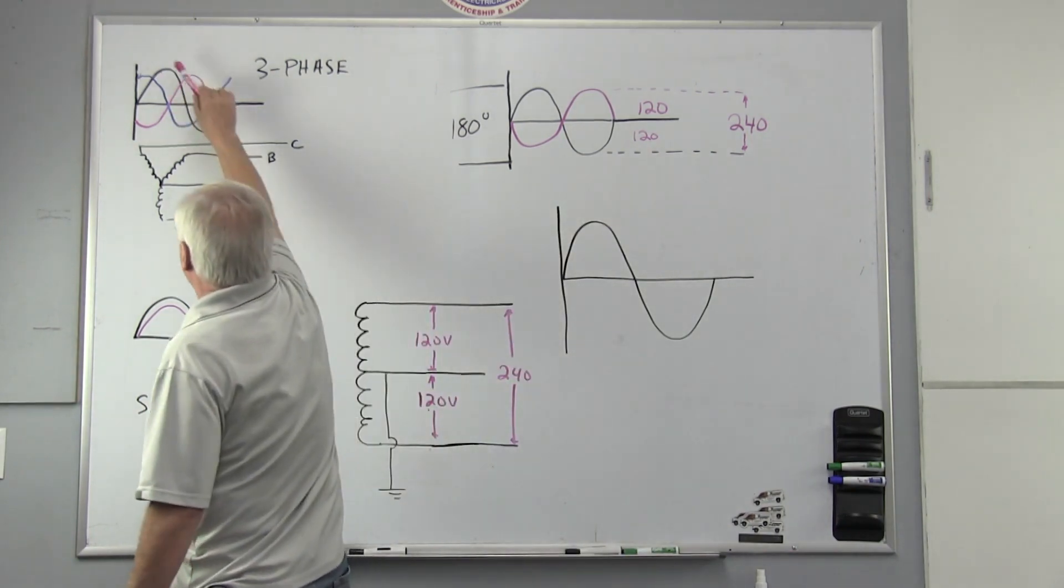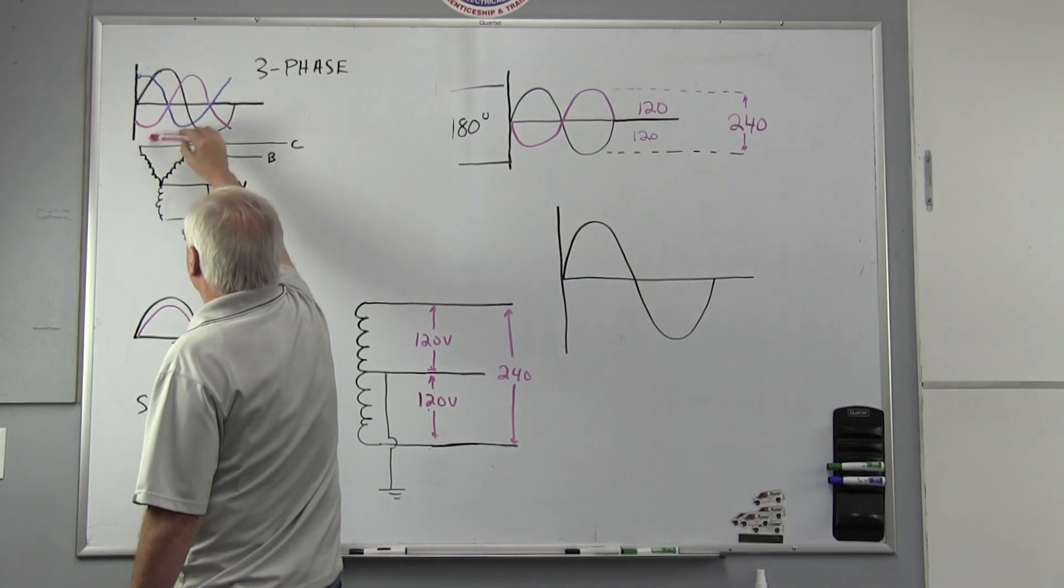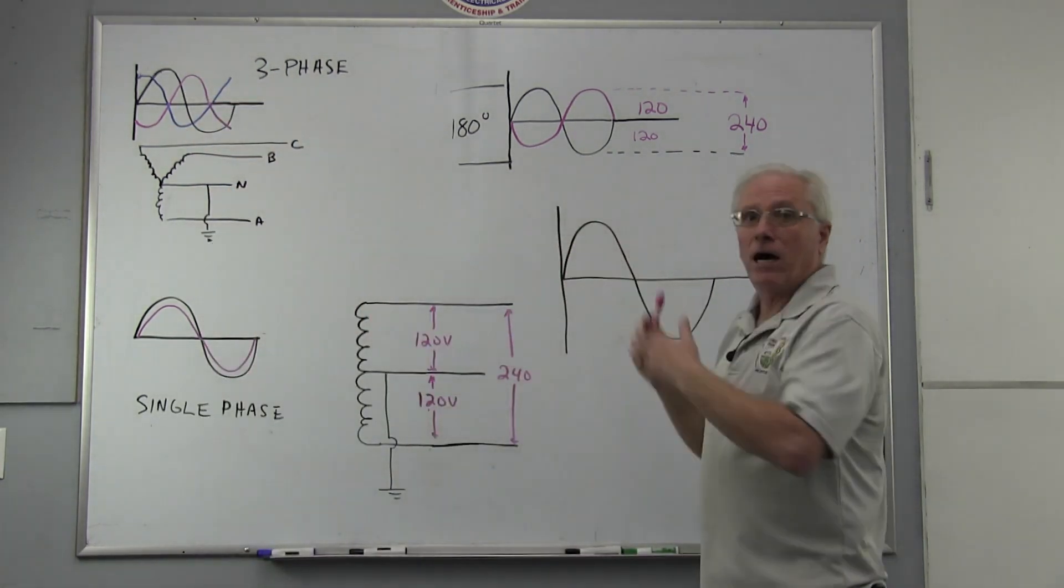The A phase, the black one, starts off at one point, and then 120 degrees later you have the red B phase, and the C phase is 120 degrees separated. They're all developed at separate times, all three of them.